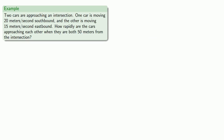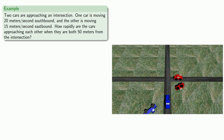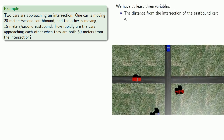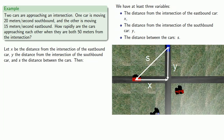Now consider this problem. We have two cars approaching an intersection. One car is moving at 20 meters per second southbound and the other at 15 meters per second eastbound. We'd like to know how rapidly the cars are approaching each other when they are both 50 meters from the intersection. To begin with, we have at least three variables: the distance from the intersection of the eastbound car, which we'll call x; the distance from the intersection of the southbound car, which we'll call y; and the distance between the cars, which we'll call s.